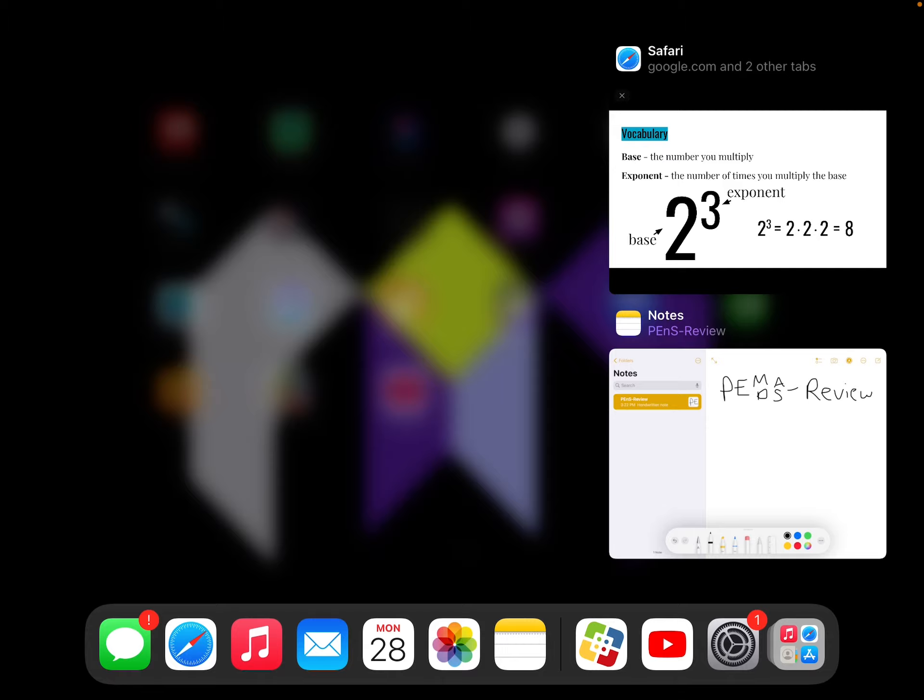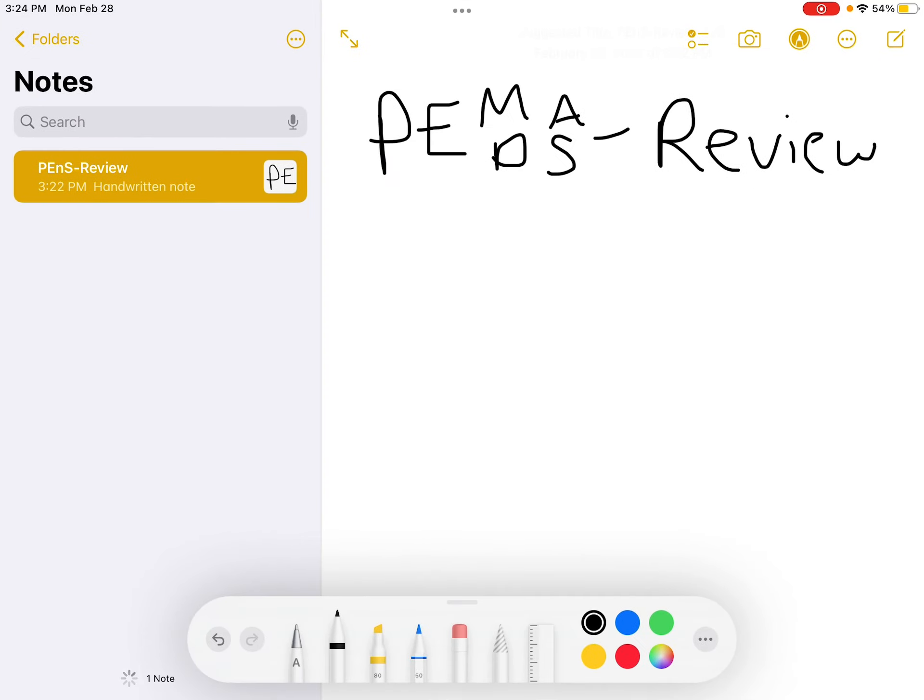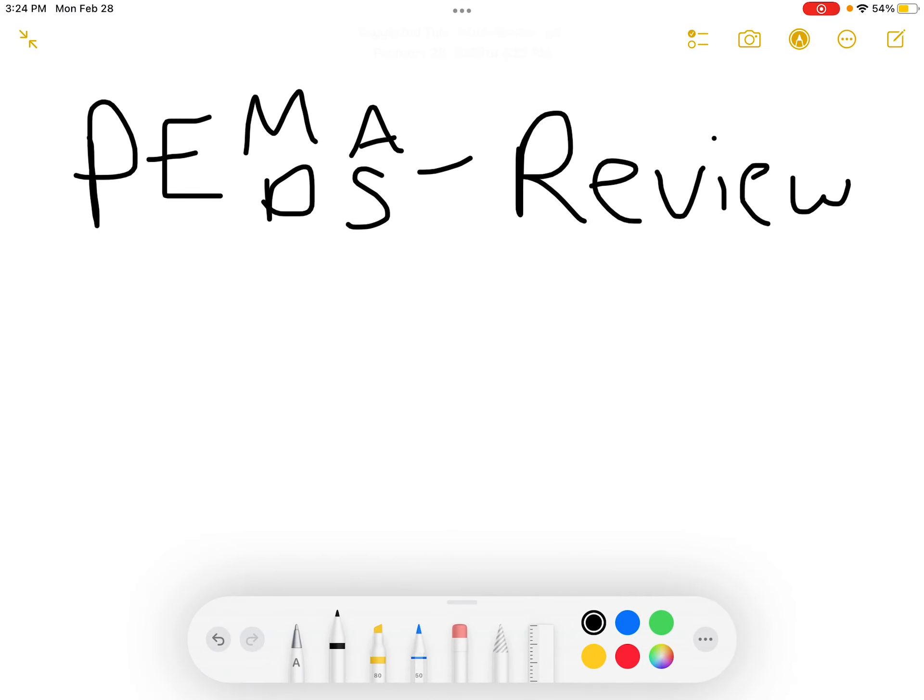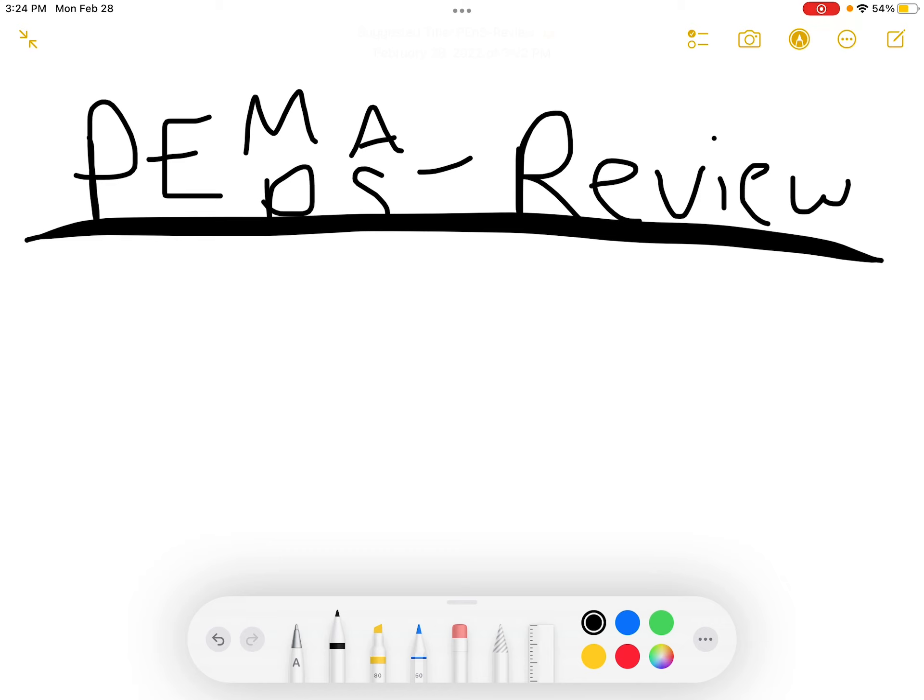Let's go through some example problems together. Find somewhere that you can write, and please make sure you're writing these down with me. My first problem is 24 divided by 3 times 2 plus 4.